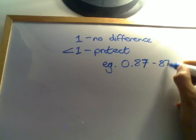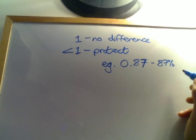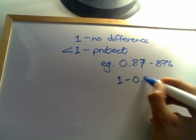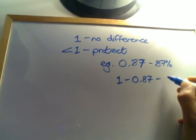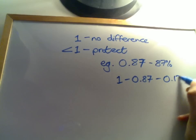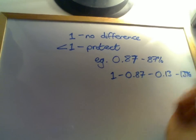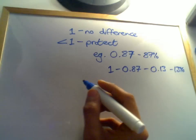This can be thought of as 87%. If we take this away from one, we get relative risk reduction of 0.13, a relative risk reduction of 13%. If you don't remember that, look back at medical statistics too.